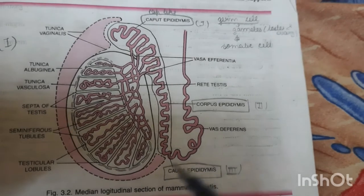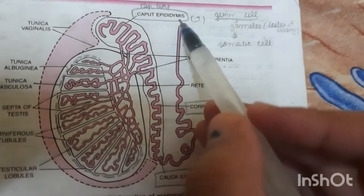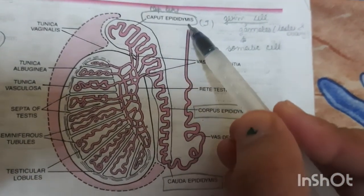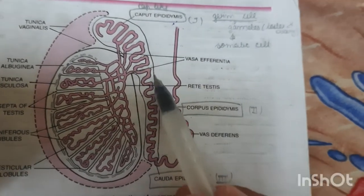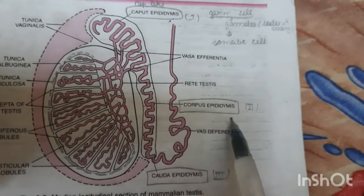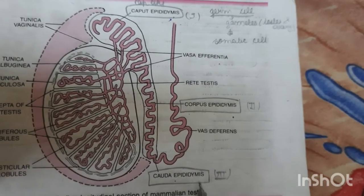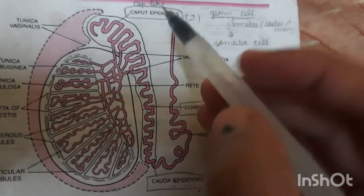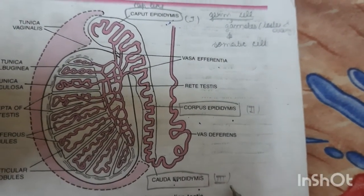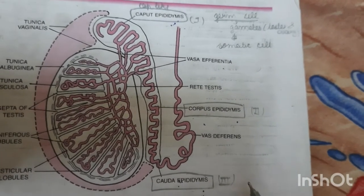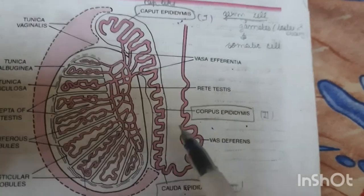Here is the diagram representing the median longitudinal section of the mammalian testis. We can clearly see the caput epididymis as the anterior part, the corpus epididymis as the middle part, and the cauda epididymis as the posterior part. Remember: caput, corpus, and cauda are the three parts that constitute the epididymis — the mass of long, narrow, coiled tubule structure lying along the inner side of the testis.